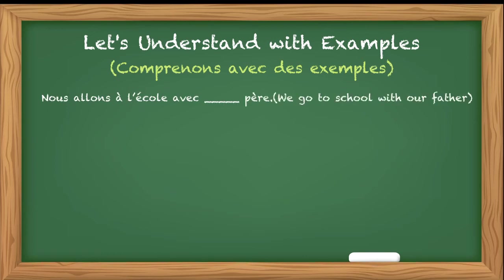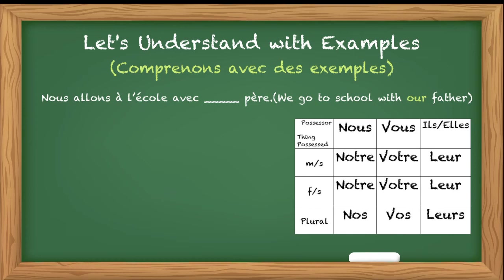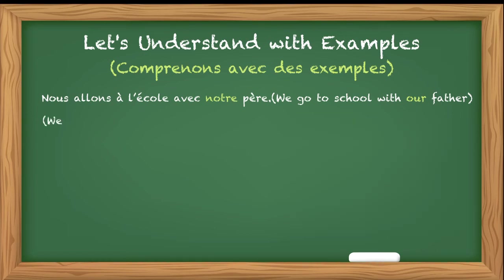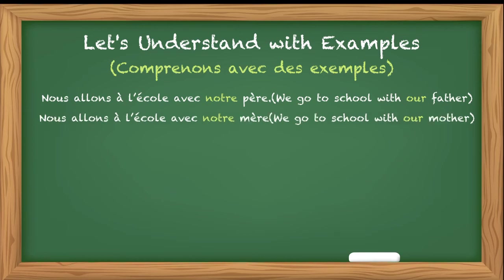Let's understand with examples. 'Nous allons à l'école avec ___ père.' We go to school with our father. Father is masculine singular. Looking in the table below nous, we have three possessive adjectives: notre, notre, nos. Father is masculine singular, so it will be notre — Nous allons à l'école avec notre père. One more: 'We go to school with our mother' — Nous allons à l'école avec notre mère — because mère is feminine singular, so notre is used.